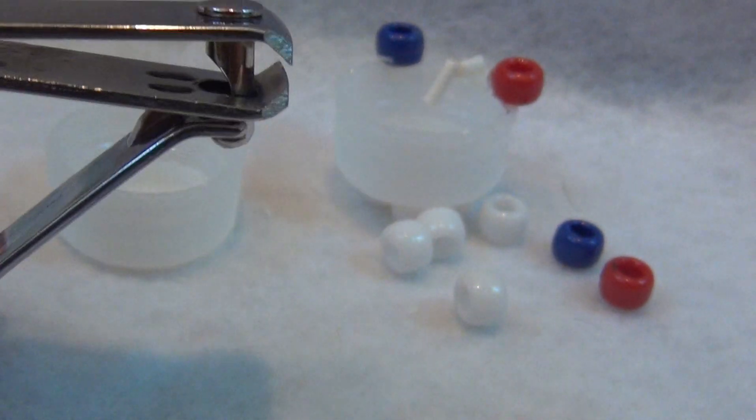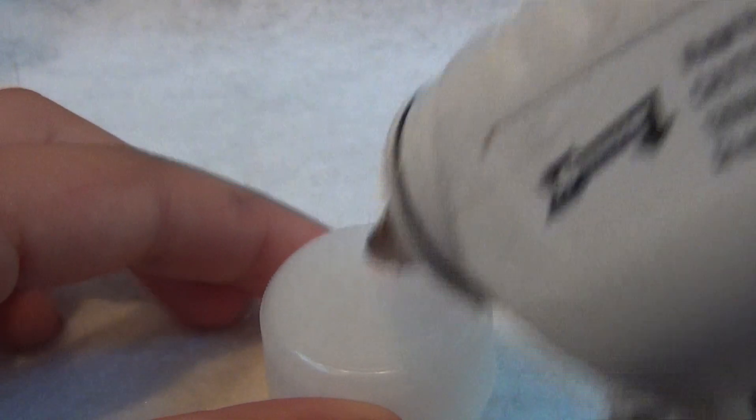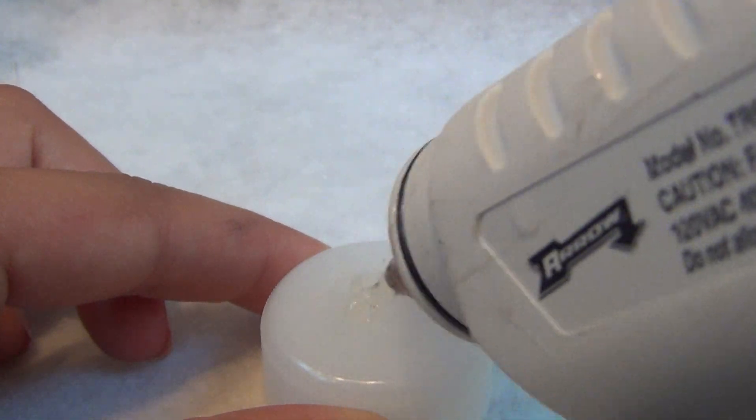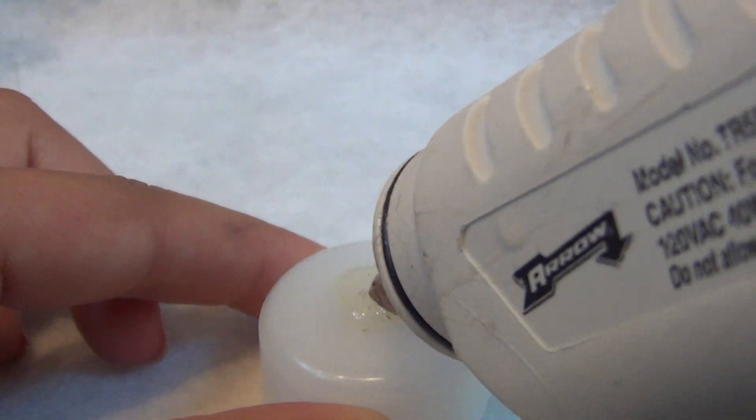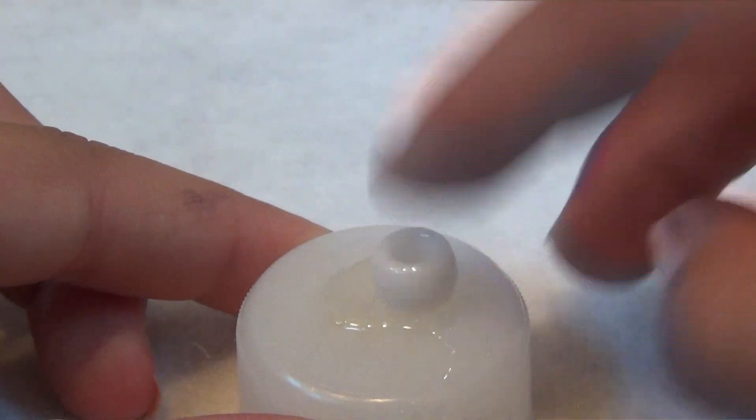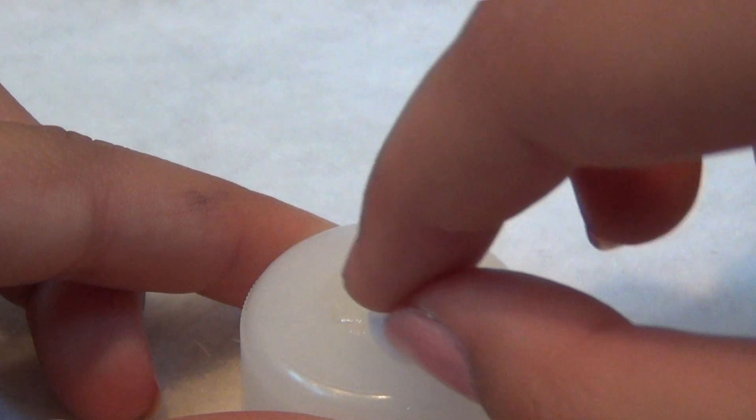Don't worry, I learn from my mistakes. First, take your hot glue gun and glue a little bit onto the bottom of your cap and stick your four white beads on.